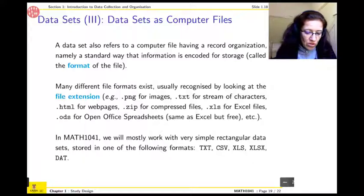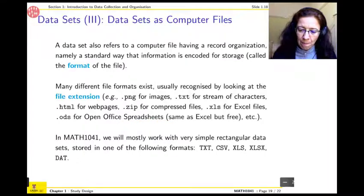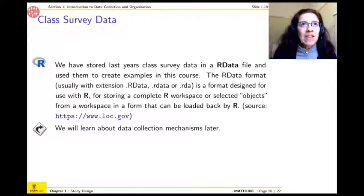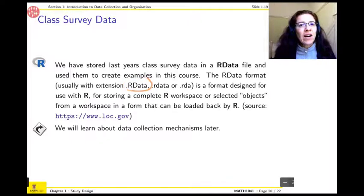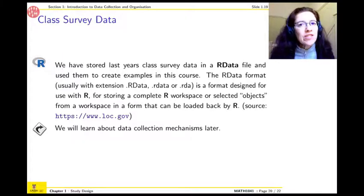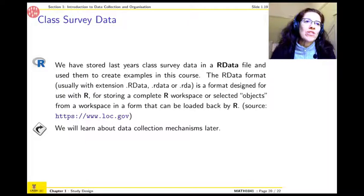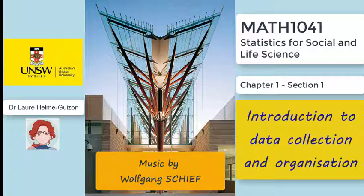We sometimes also use ODS, which is basically the free version of Excel from OpenOffice. And an example of data we've stored in the past, we have asked the 1041 students to answer a survey, and we've stored the results in a file with extension R data. R, because we're going to be using a software called R a lot, to produce the examples in this course. So for example, we will have histograms or a box plot or analysis, which are using the real data we collected during this survey.